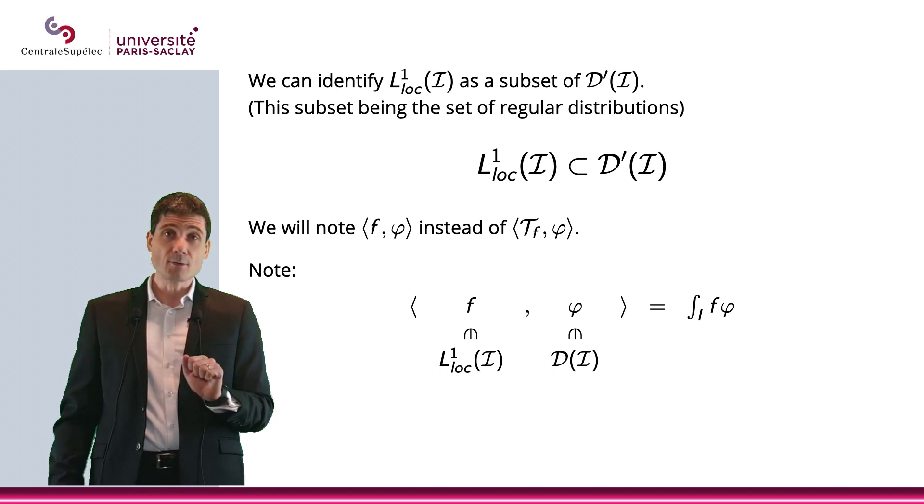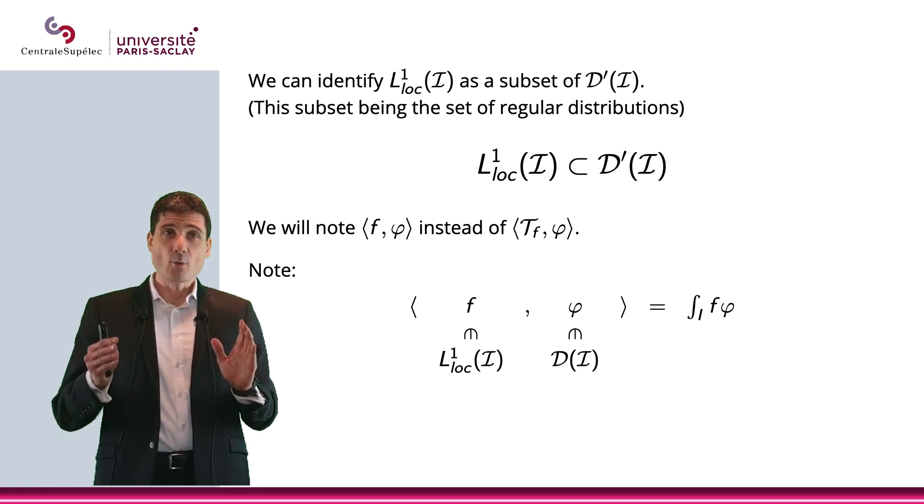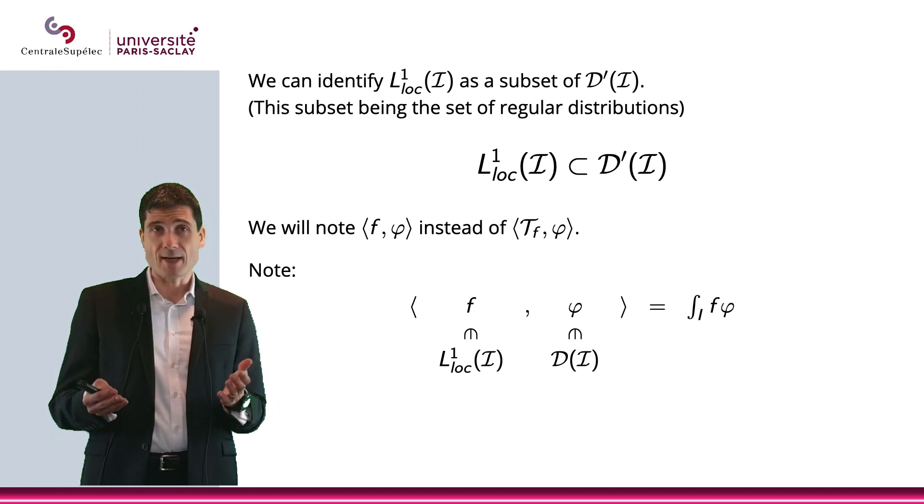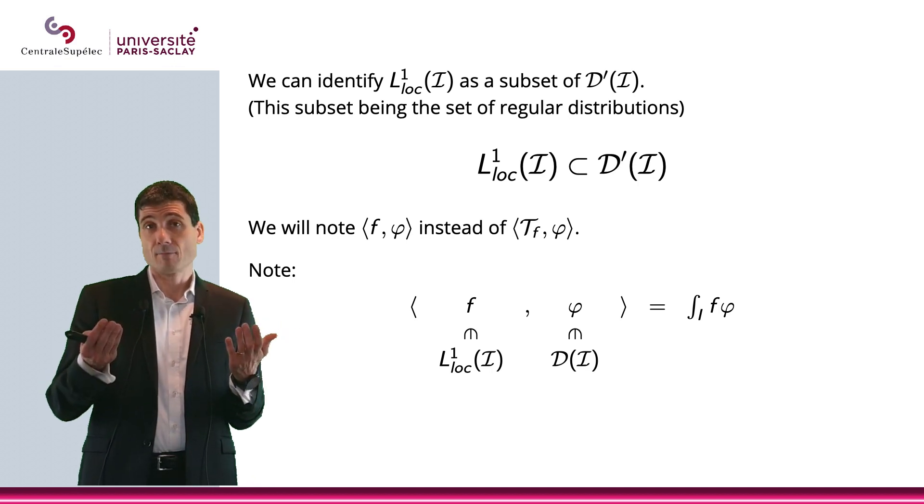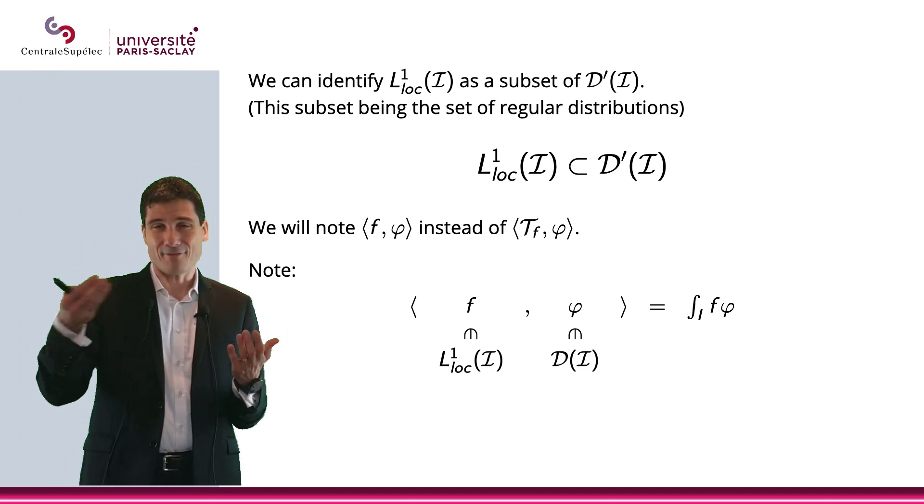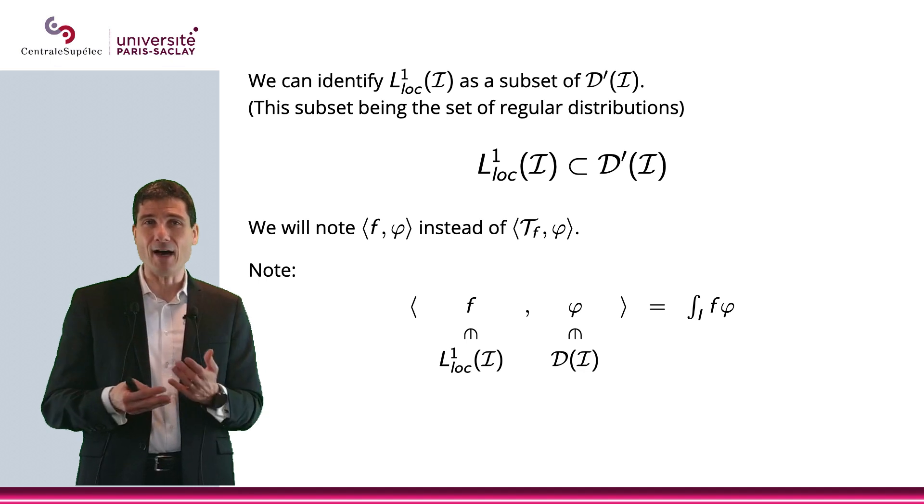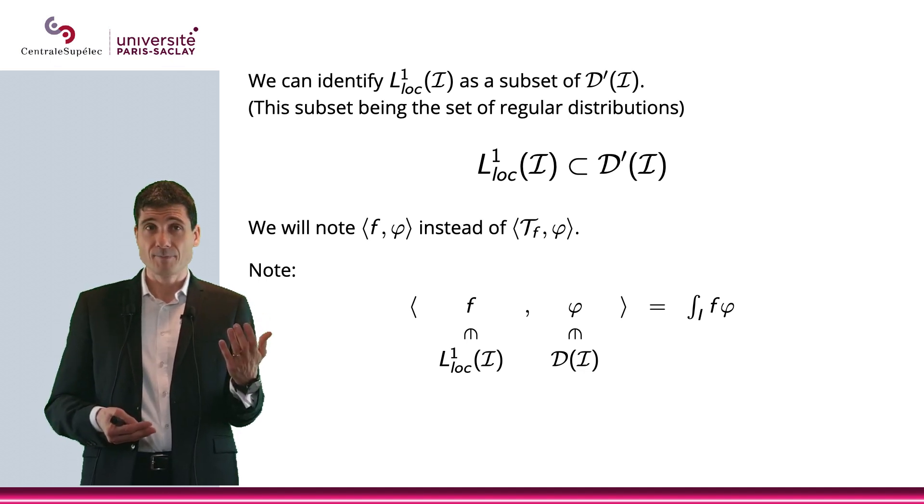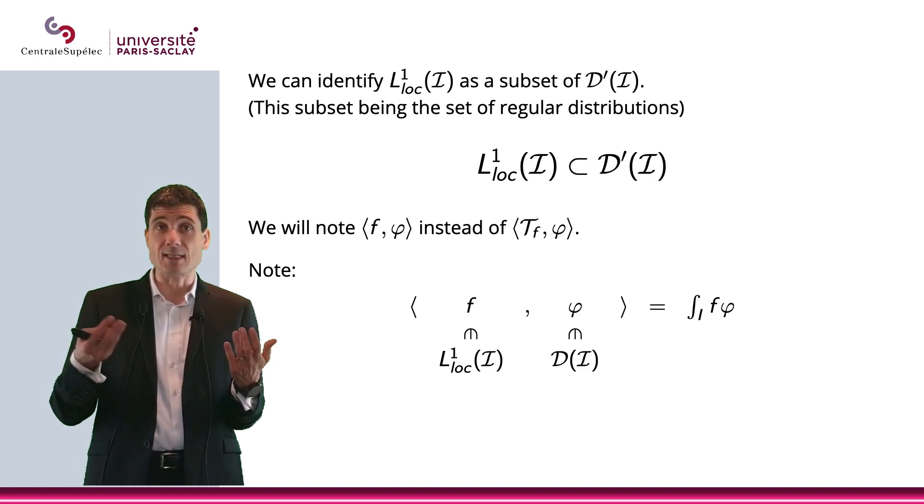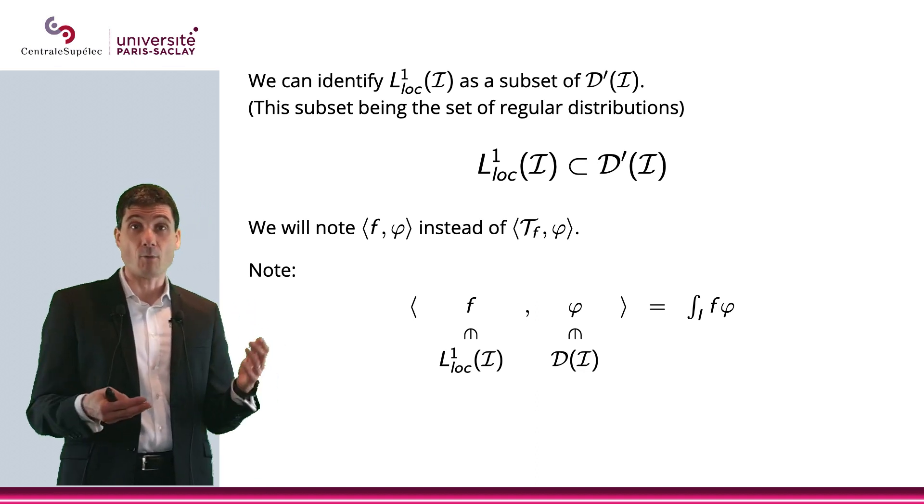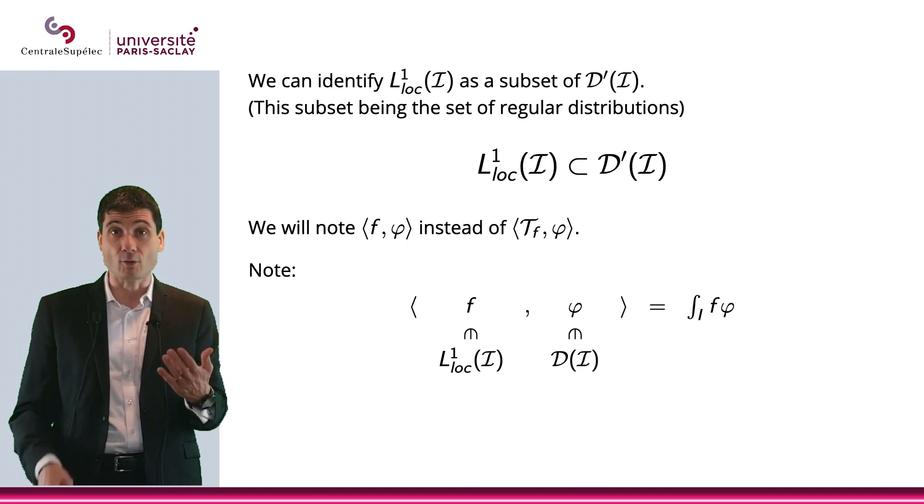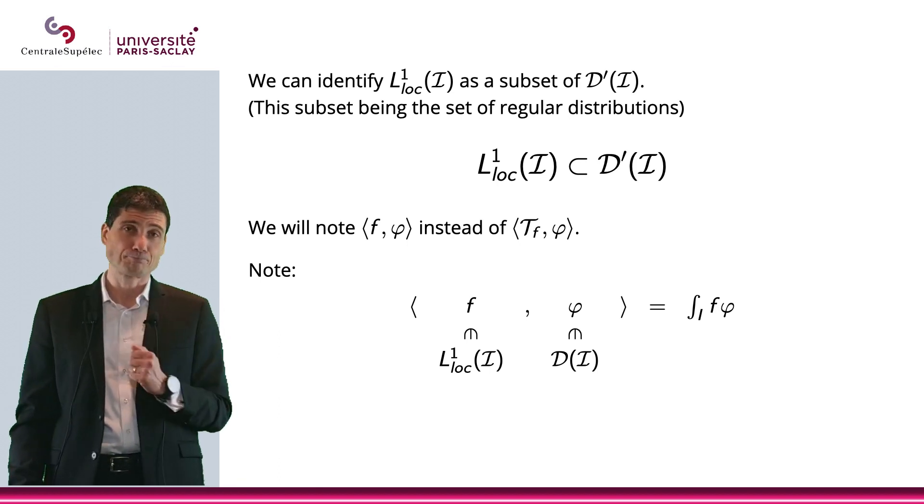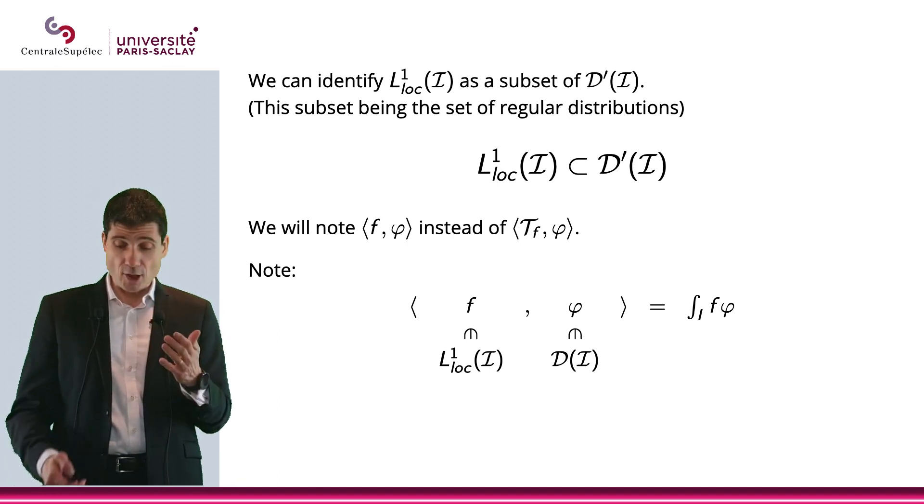I would like to note something. When we use the bracket notation, ⟨f, φ⟩, meaning T_f(φ), but when we do ⟨f, φ⟩, f is in L¹ₗₒ𝒸 and φ is a bump function, a test function in D. And again, while the definition is right here, that's the integral of f φ over I.